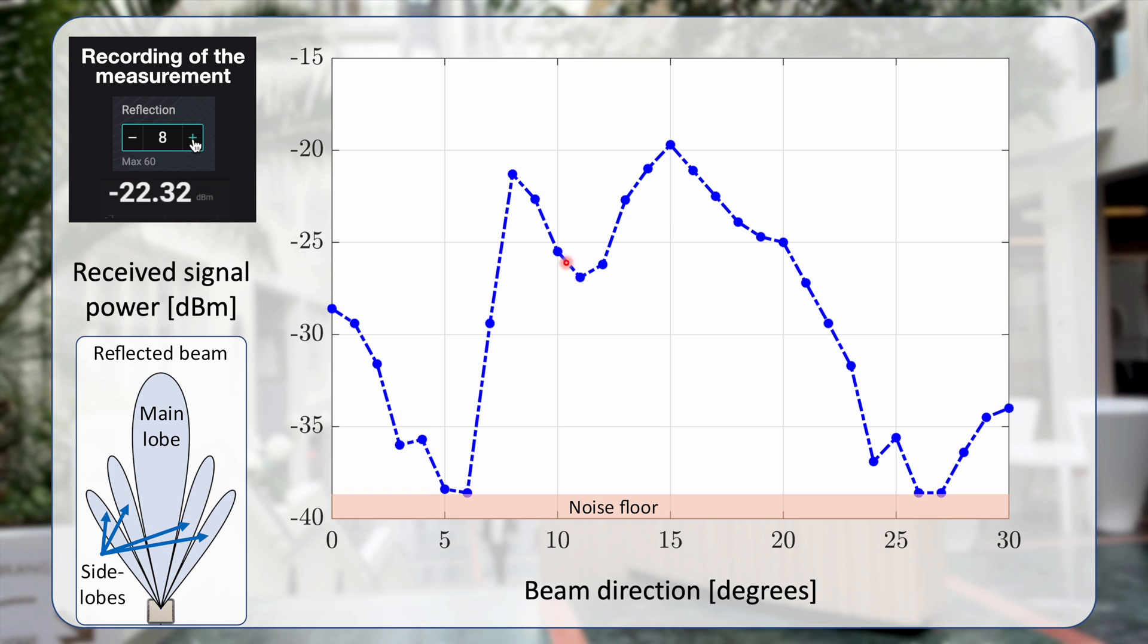After a while it goes down and we instead start to be having a main lobe pointing towards the receiver. We have the peak angle exactly at 15 degrees, which is where we put our receiver. When we continue increasing the reflection angle, we see how the received power is going down. We roughly have a 5 degree beam width here with reasonably strong beamforming gain. After that, the signal is going down and we come almost all the way down to the noise floor.